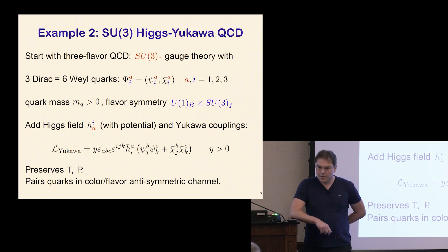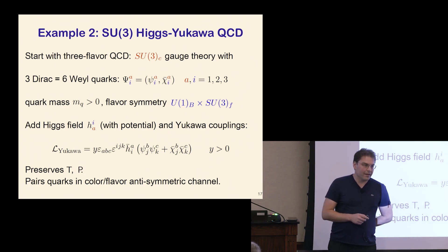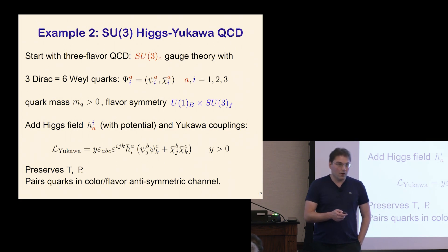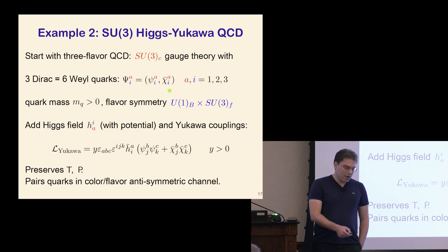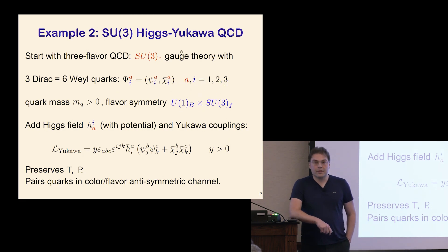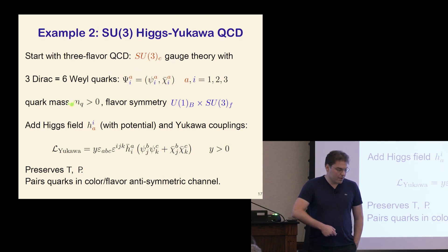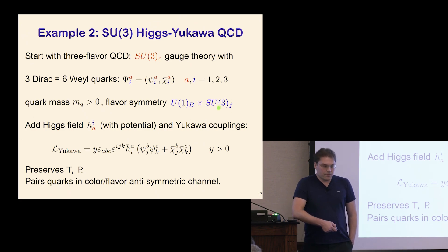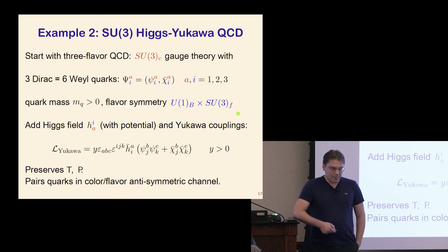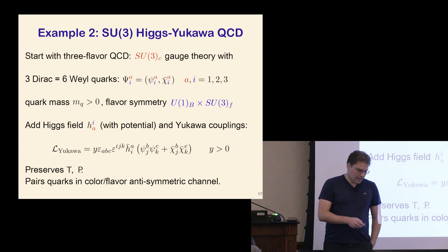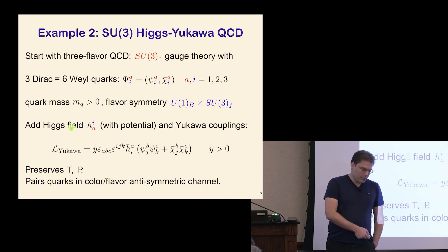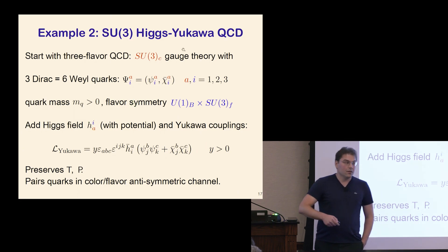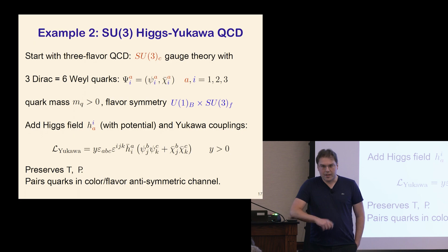The next example is very similar but with new features. Take SU(3) gauge theory — basically ordinary three-flavor QCD with three flavors of Dirac fermions, or in the Weyl presentation, six pairs of Weyl quarks ψ and χ, where A and I are color and flavor indices running from 1 to 3. We take QCD with positive quark mass, flavor-degenerate for simplicity. There is a U(1) baryon number symmetry and Gell-Mann SU(3) flavor symmetry. We add a Higgs field as a bi-fundamental of both color and flavor, and add a scalar potential.